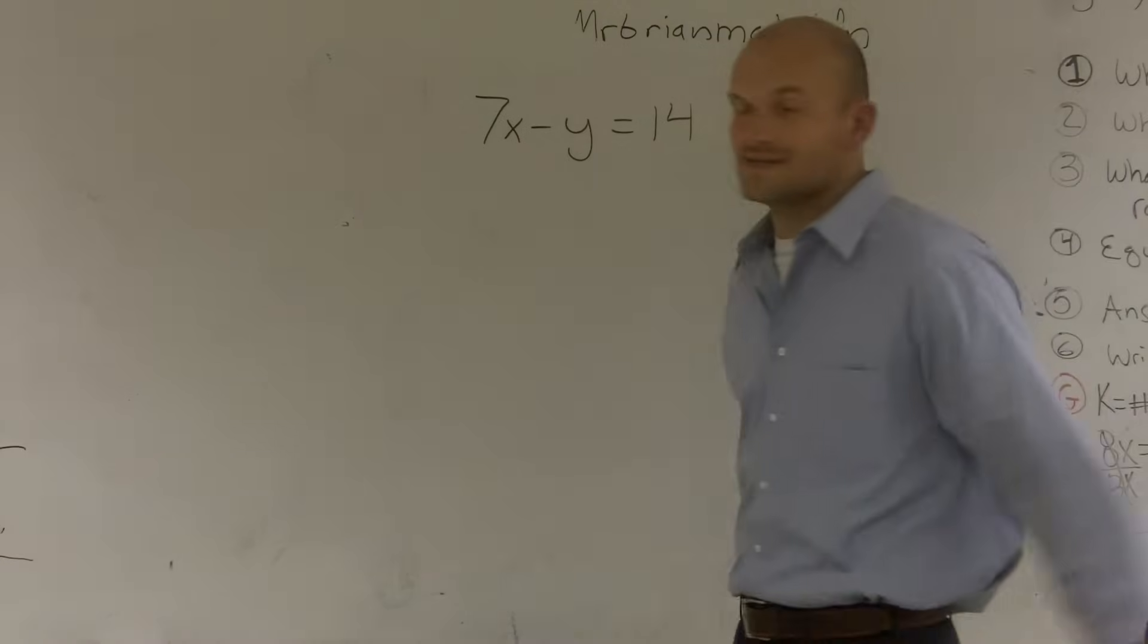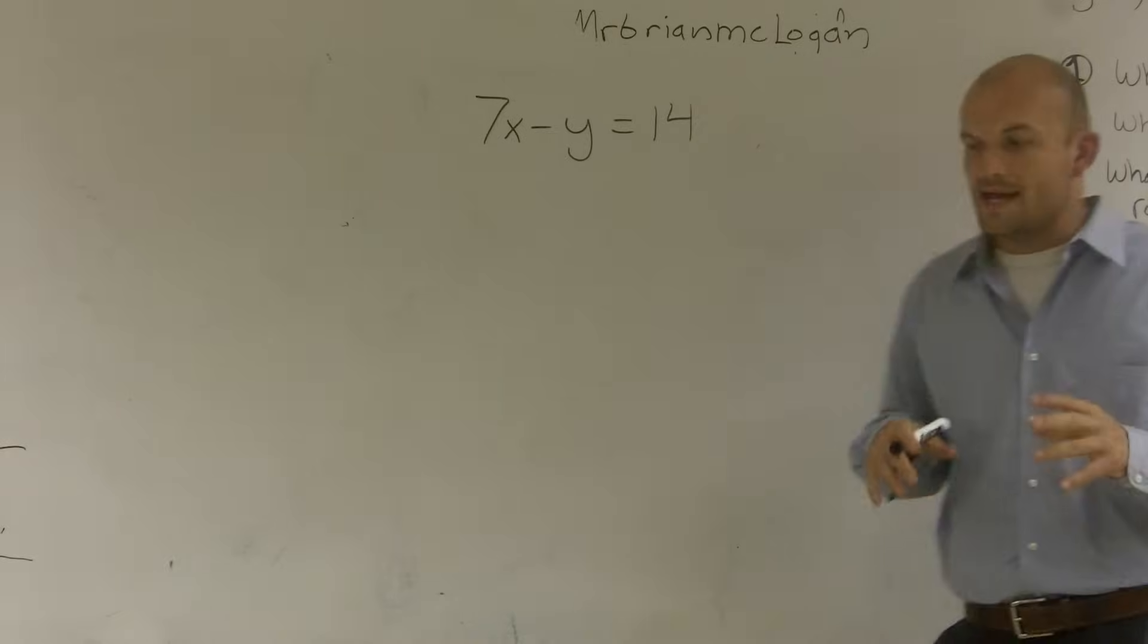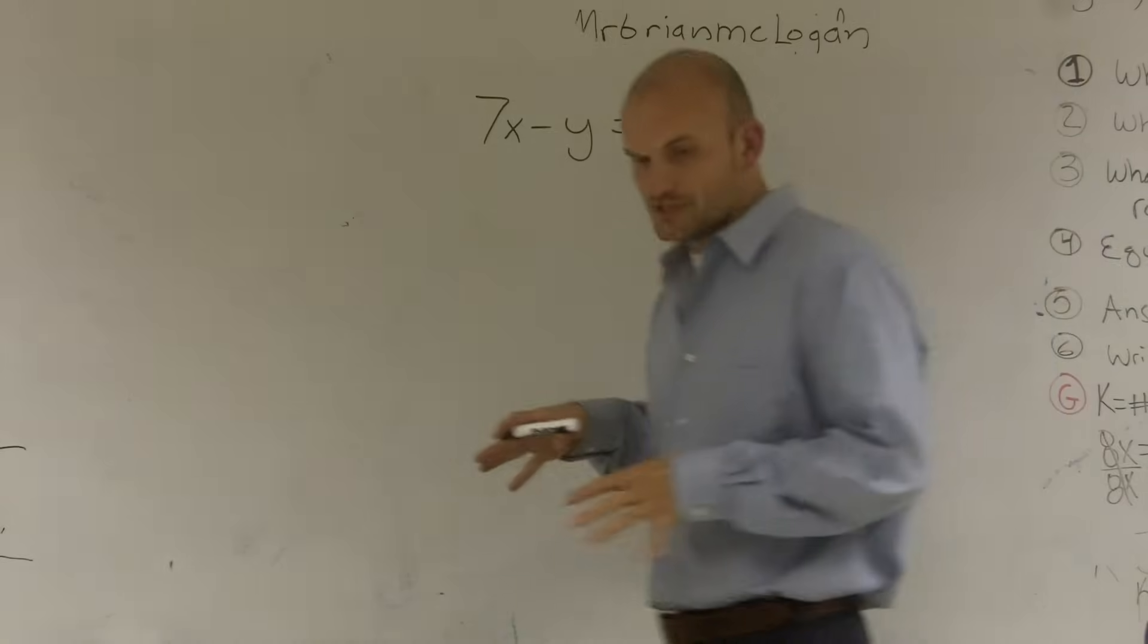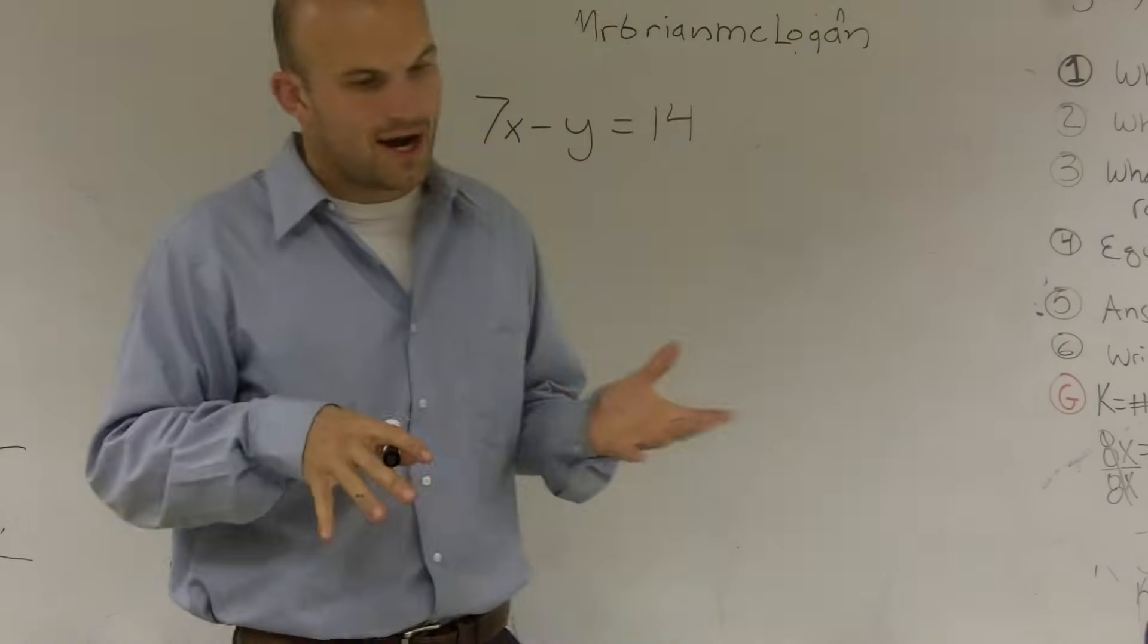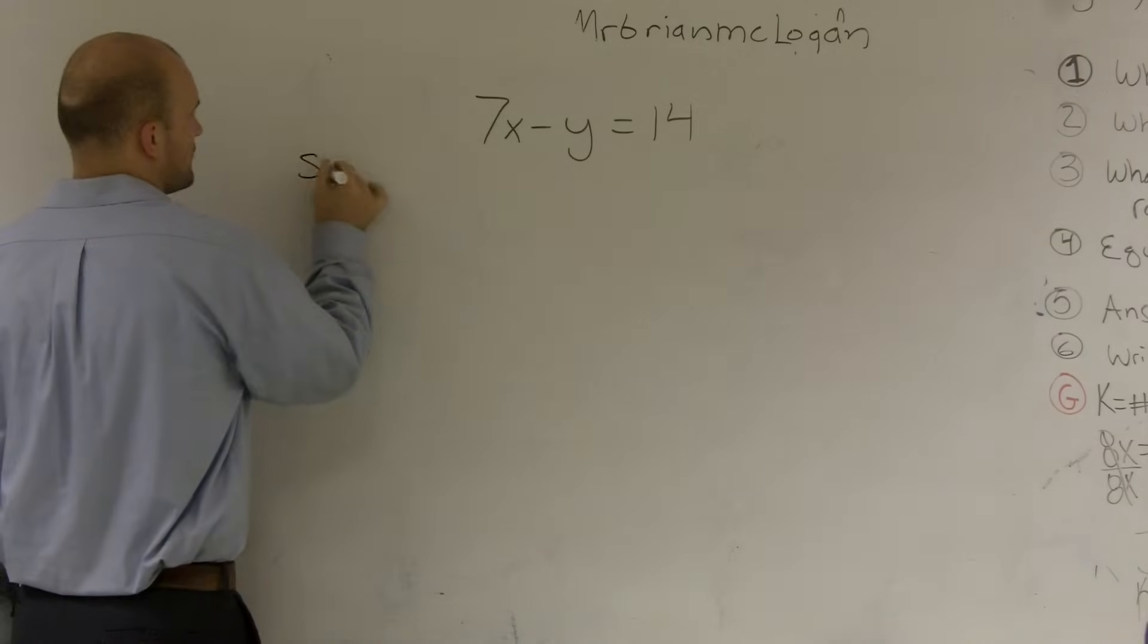All right. What we have here is a problem. We have 7x minus y is equal to 14. And what they're asking us to do is solve for y. And actually, let's do it both ways. Let's solve for x and let's solve for y.